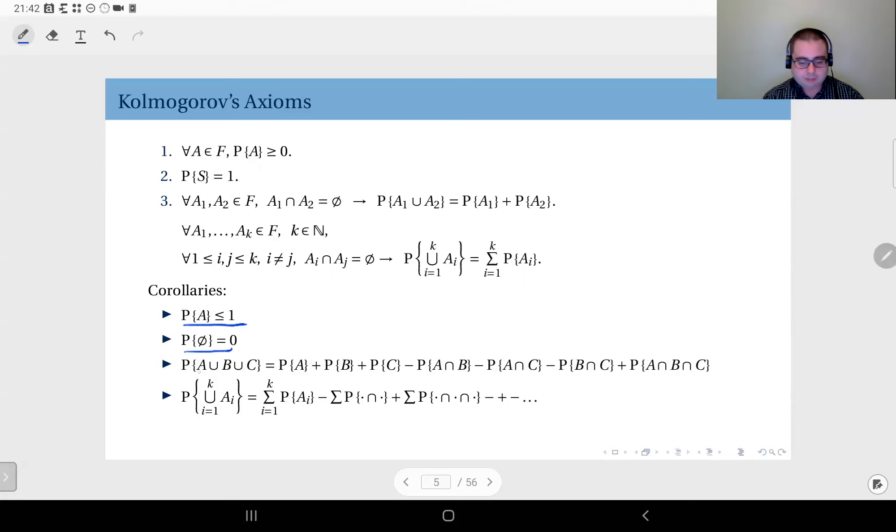The probability of a union in the form of A union B union C, for instance, is equal to P(A) + P(B) + P(C) - P(A ∩ B) - P(A ∩ C) - P(B ∩ C) + P(A ∩ B ∩ C). Again, this is not that difficult to see, and one thing you need to be careful about is not to confuse this with axiom number three.